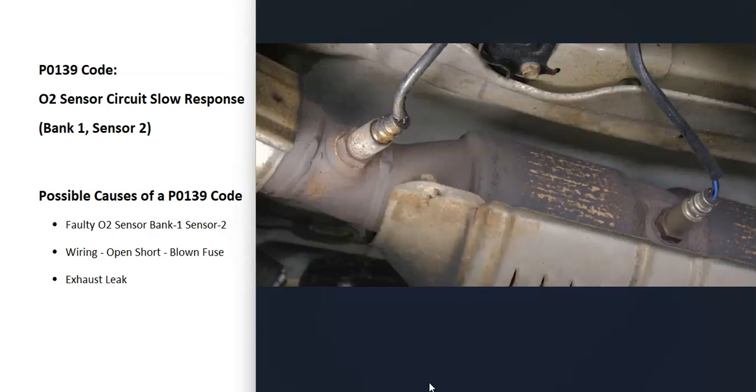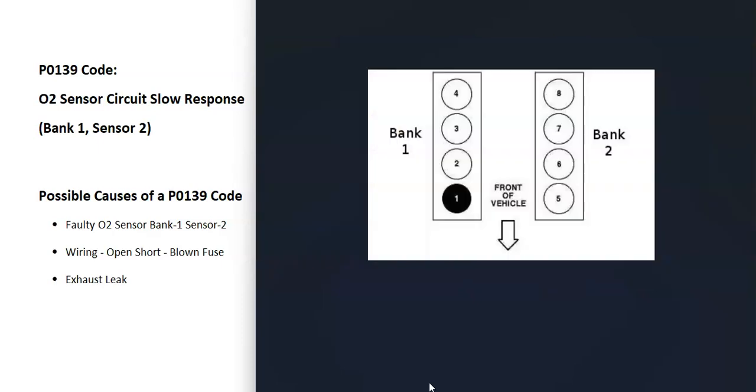For some reason, the computer is seeing a problem with this, so you need to troubleshoot to know why. If you have a V6 or V8 engine, you'll have two banks. Bank one is always on the side with the number one cylinder, and the opposite is bank two. If you find the number one cylinder on your engine, that's the side having the issues.